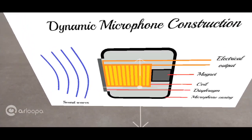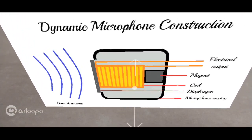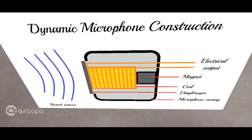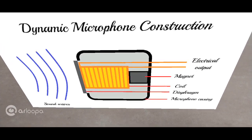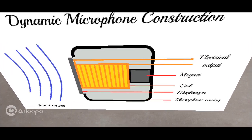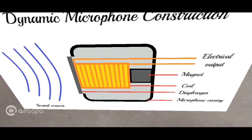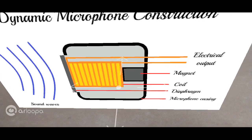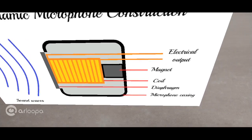When sound waves arrive at the diaphragm — sound waves are composed of compressions and rarefactions — they move back and forth. When they hit the diaphragm, the diaphragm also starts moving back and forth. This back and forth movement of the diaphragm is carried on further by the coils, which also start moving back and forth.